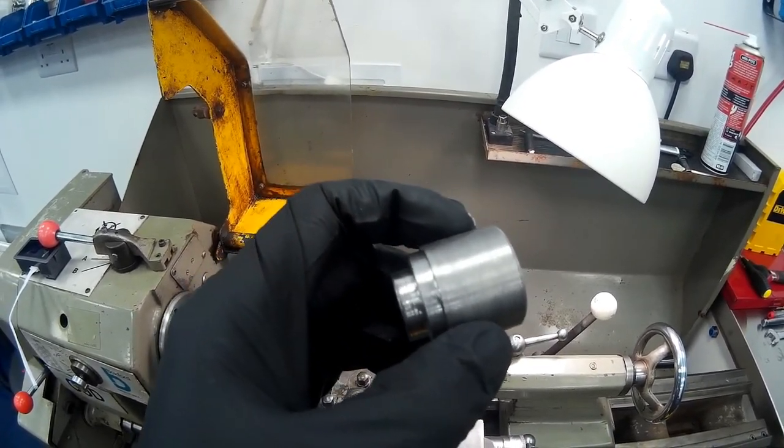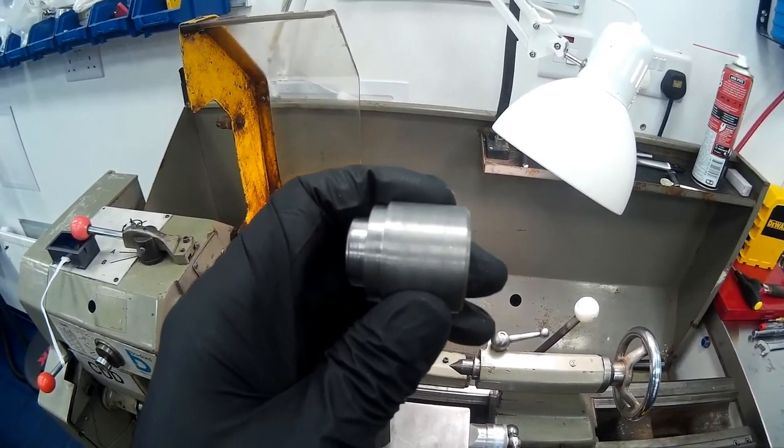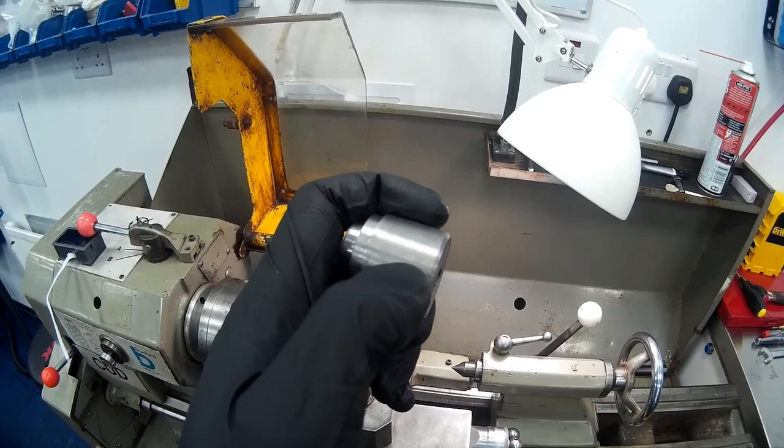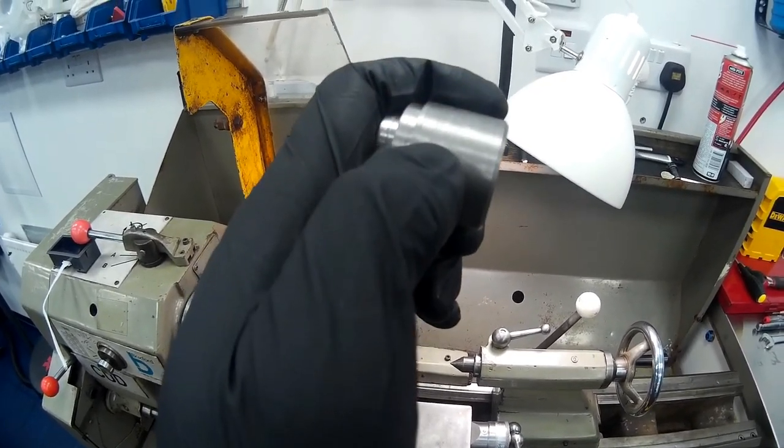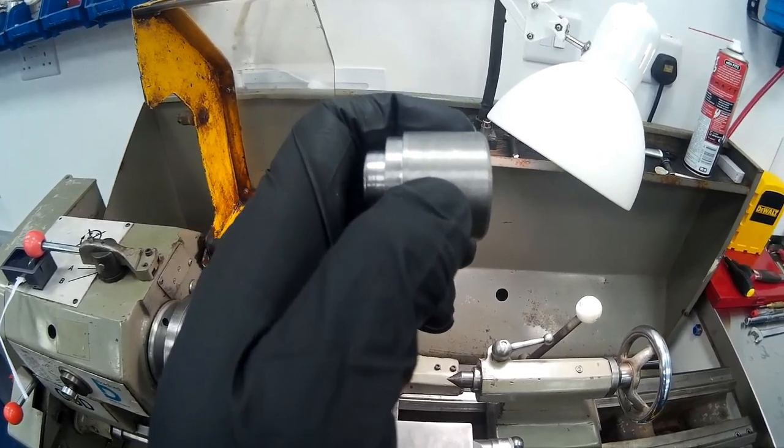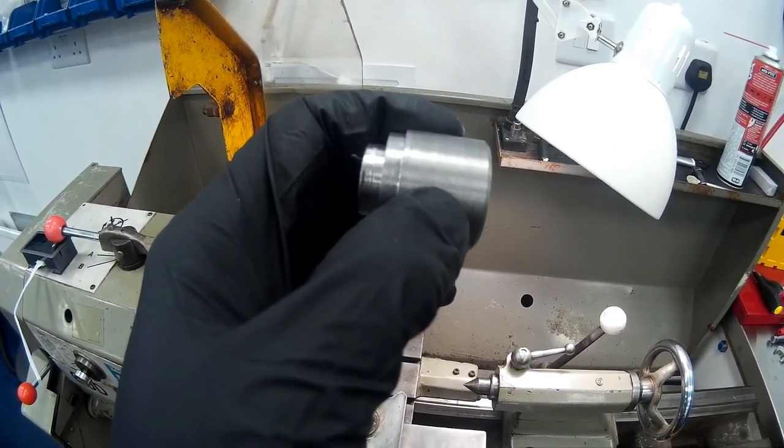And to put our magnet in we're going to put this in the four jaw chuck. We don't need to dial it up as dead centre. As long as we're central to somewhere on the side of the body, then we can mount our magnet inside it and then we'll just drill a small hole to mount our magnet.